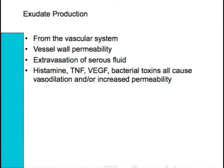Where does exudate production come from? It comes from the vascular system. We get extravasation of serous fluid, and it brings with it histamine, TNF, other growth factors, and bacterial toxins. So it's full of both positive and negative aspects, and they can present us with some fairly difficult management problems if we don't get them right.